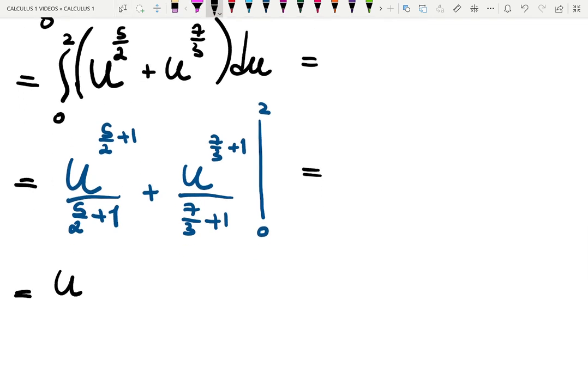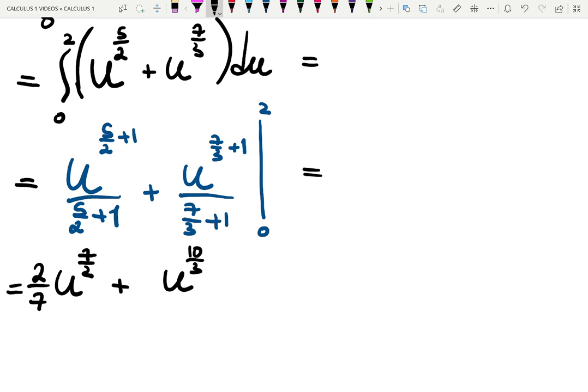Now, u will be raised to 5 over 2 plus 2 over 2 is 7 over 2 divided by 7 over 2. When you divide by a fraction, you can multiply by the reciprocal of that fraction. So I am multiplying by 2 sevenths. Plus, u raised to the 7 over 3 plus 3 over 3 is 10 over 3 divided by 10 over 3. So now I will be multiplying by 3 over 10.